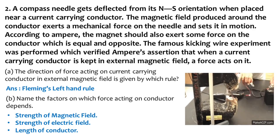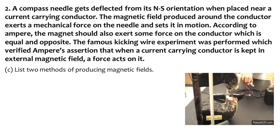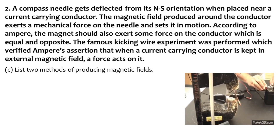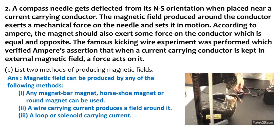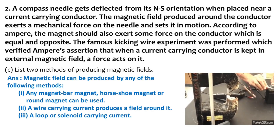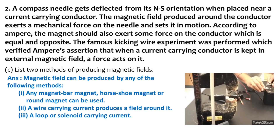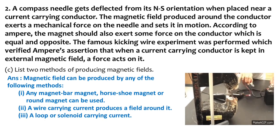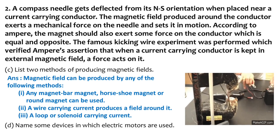Question C: list two methods of producing magnetic fields. There are three ways to produce a magnetic field. You can use a bar magnet, horseshoe magnet, or any round magnet. A current-carrying conductor can produce a magnetic field around it. A circular loop or a solenoid can also produce a magnetic field if current flows through it.